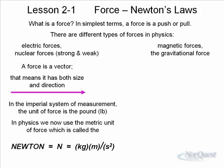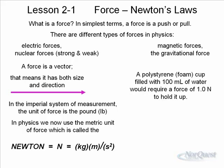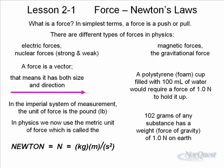The imperial unit of measure, the unit of force, is the pound. We don't use pounds in physics; we use the metric unit of force, which is called the Newton, or in basic units, the kilogram meter per second squared. Just to get an idea of the magnitude of a Newton, a polystyrene foam cup filled with about 100 milliliters of water would require a force of 1 Newton to hold it up. In other words, about 102 grams. So 102 grams of a substance has a weight of 1 Newton. On the moon, objects are lighter, and therefore it would be less of a force.